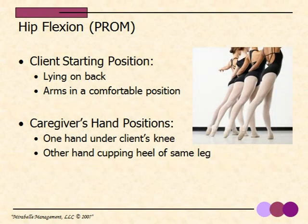The next passive range of motion stretch is hip flexion. Once again, the client is lying on their back and their arms are in a comfortable position. Caregivers, place one hand on the client's knee and the other hand cupping the heel of the same leg. Remember to move the limb slowly until you come to a point where you feel resistance — stop there and hold that position. The hip flexion stretch helps with back pain and assists with walking and transfers.